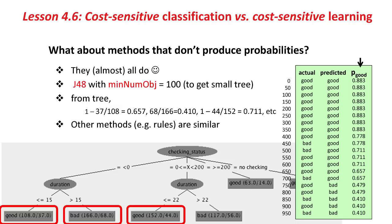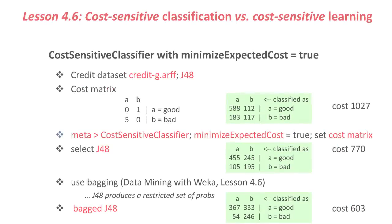So we can get probabilities from J48, or from other methods as well. Well, let's do this. To do this in Weka, we use the cost-sensitive classifier with minimum expected cost equals true.